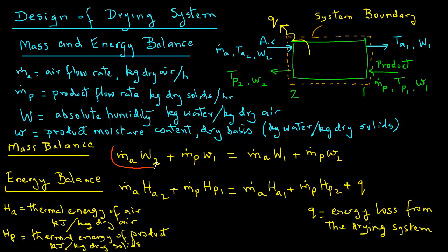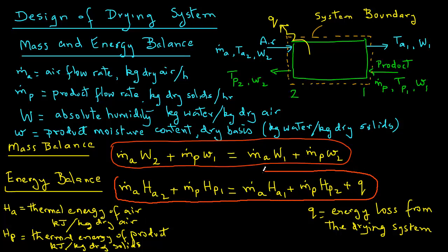So we have a mass balance for the amount of water entering and leaving the drying system, and we have an energy balance, which gives us the amount of heat energy coming in with air and product, and also through any losses from the drying system.